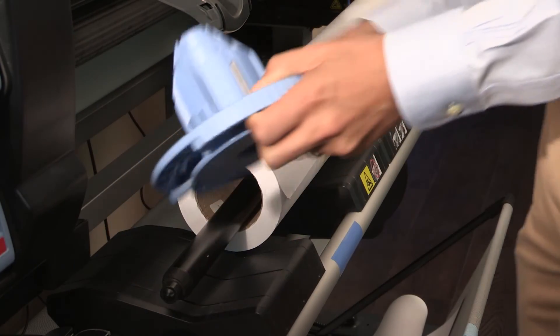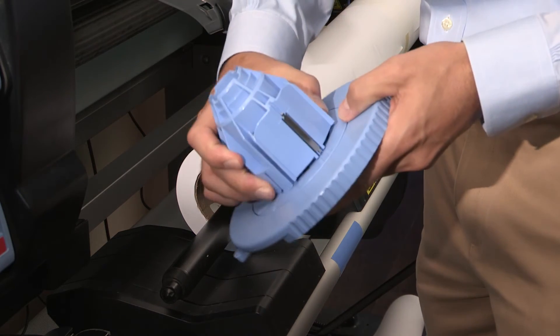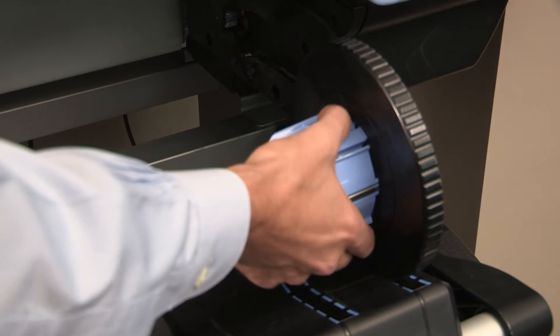Removing the adapters is as easy as putting them on. Press the two tabs on the spindle hub and slide the adapters off.